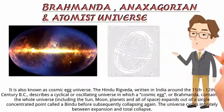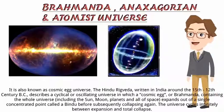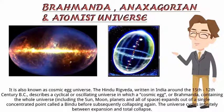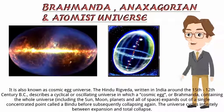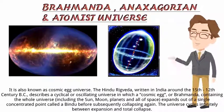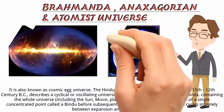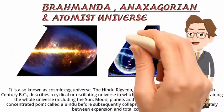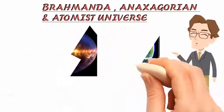moon, planets, and all of space, expands out of a single concentrated point called a bindu, before subsequently collapsing again. The universe cycles infinitely between expansion and total collapse.